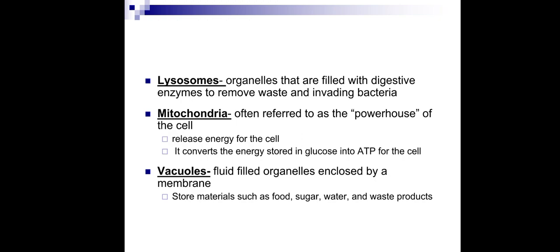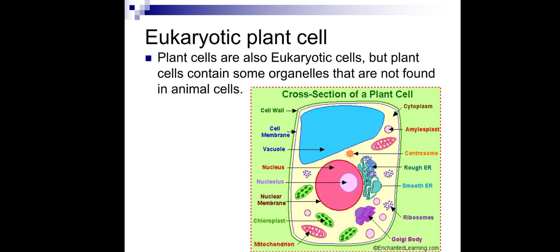We will discuss metabolism further in a later chapter. The vacuole is a fluid-filled organelle enclosed by a membrane. It stores materials such as food, sugar, water, and waste products, and is mainly found in plant cells. This is a cross-section of a plant cell — the blue region is the vacuole, which may be one large vacuole or many small round-shaped vacuoles. The pink region is the nucleus and the green parts are the chloroplasts.